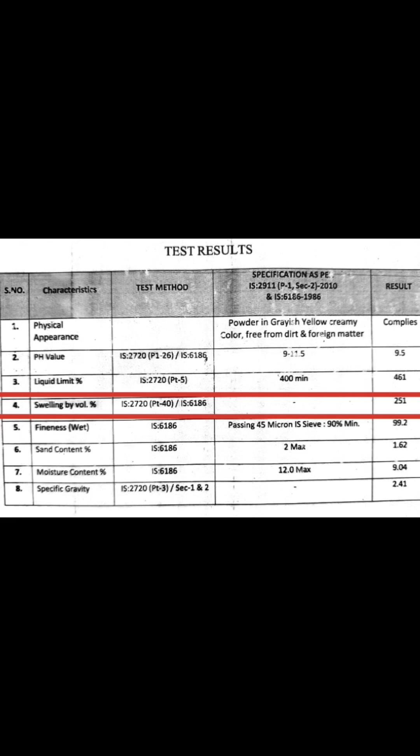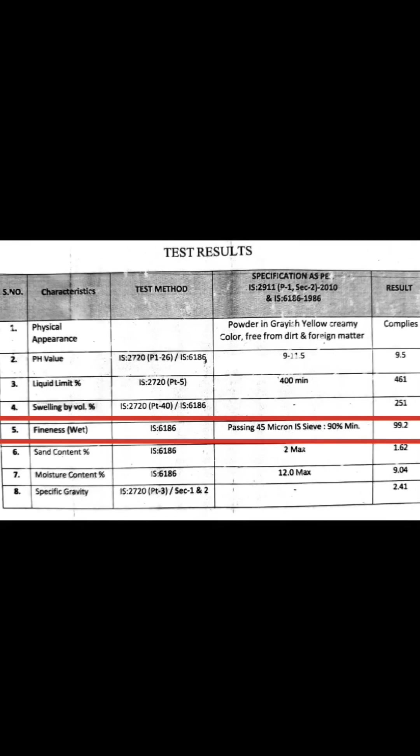Fourth is swelling by volume in percent. Testing method is IS code 2720 part 40 or IS code 6186. No limit given. Result is 251%. Fifth is fineness in wet condition. Testing method is IS code 6186. Limit is passing 45 micron IS sieve at 90% minimum. Result is 99.2%.